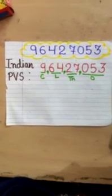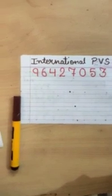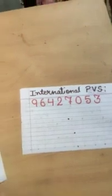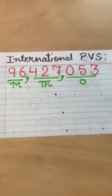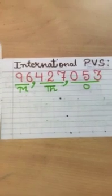In the International system, when we place the commas it works differently. It is actually very straightforward: the first period has three digits, the second period has three digits, and the third period has three digits. So we place a comma after three digits, then after the next three digits — as you can see, I have placed the commas here. This is according to the International Place Value System.